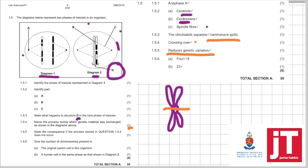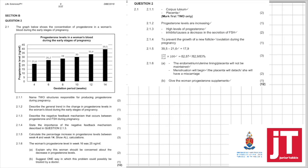1.5.4. Name the process during which genetic material was exchanged as shown in the diagram. It's only one mark, so it can only be crossing over. State the consequence if the process named in 1.5.4 does not occur. We know crossing over brings about genetic variation. So if there's no crossing over, that will be there's no genetic variation or in this case, the memo wanted reduces genetic variation. Because crossing over, why are we saying reduces? Because this is not the only process that brings about genetic variation. 1.5.6. Give the number of the chromosomes present in the original parent cell in this organism. This is already meiosis 2. Here, there's already two chromosomes. So how many chromosomes would have been present in the first original parent? Obviously, four. And in a human cell in the same phase as shown in diagram 2, human cells, somatic cells are 46, but in this phase, there would have been 23.